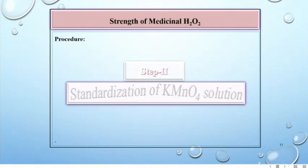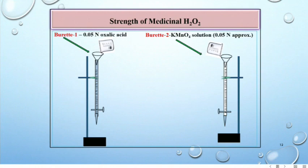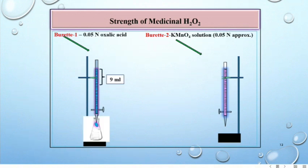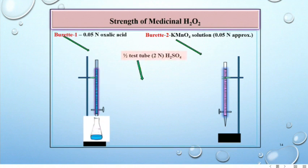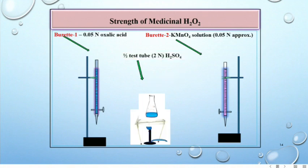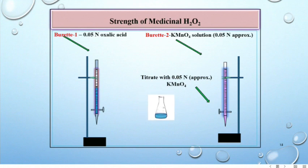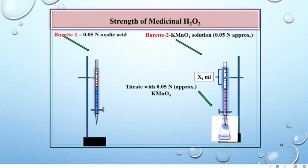Next step is standardization of permanganate solution. For that, fill the burette number 1 with 0.05 normal oxalic acid solution and burette number 2 with permanganate solution whose normality is approximate. Take 9 ml oxalic acid solution in conical flask. To this solution, add half test tube two normal H2SO4 and then heat the solution to about 60 to 70 degrees centigrade. Thereafter, titrate the solution with permanganate solution. Stir the conical flask constantly till faint pink color appears to the solution. This is X1 ml.